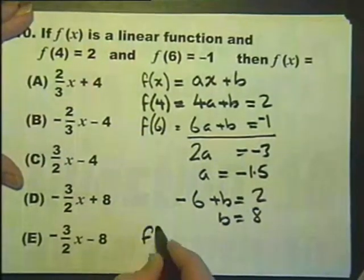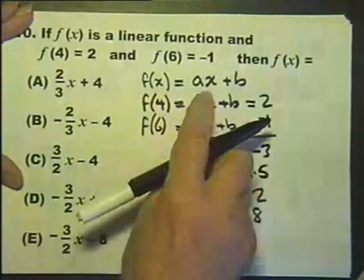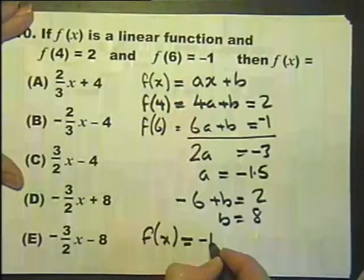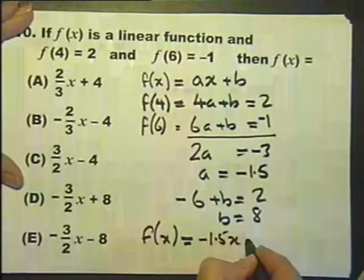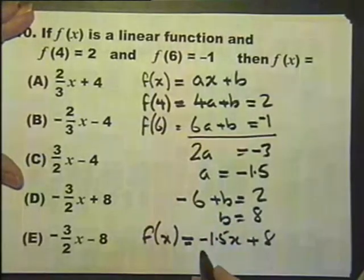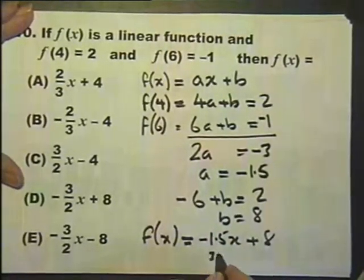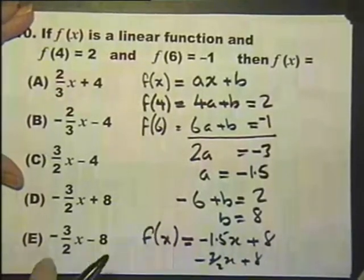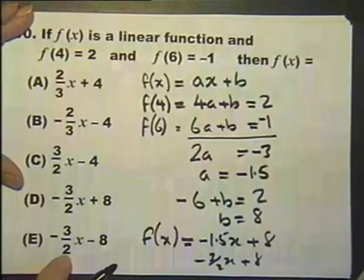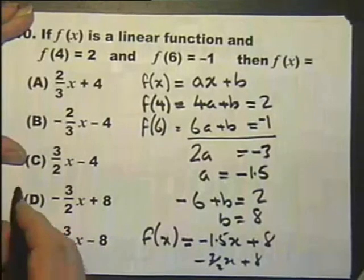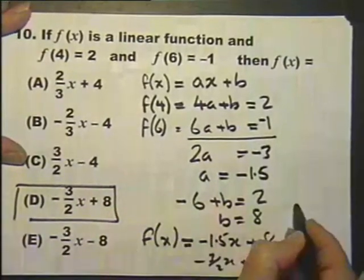We know what a is, we know what b is, so we can write down the function. The function is -1.5x + 8. Well, 1.5 is 3/2, so it's -3/2x + 8. So it's that one. Answer to question 10 is D.